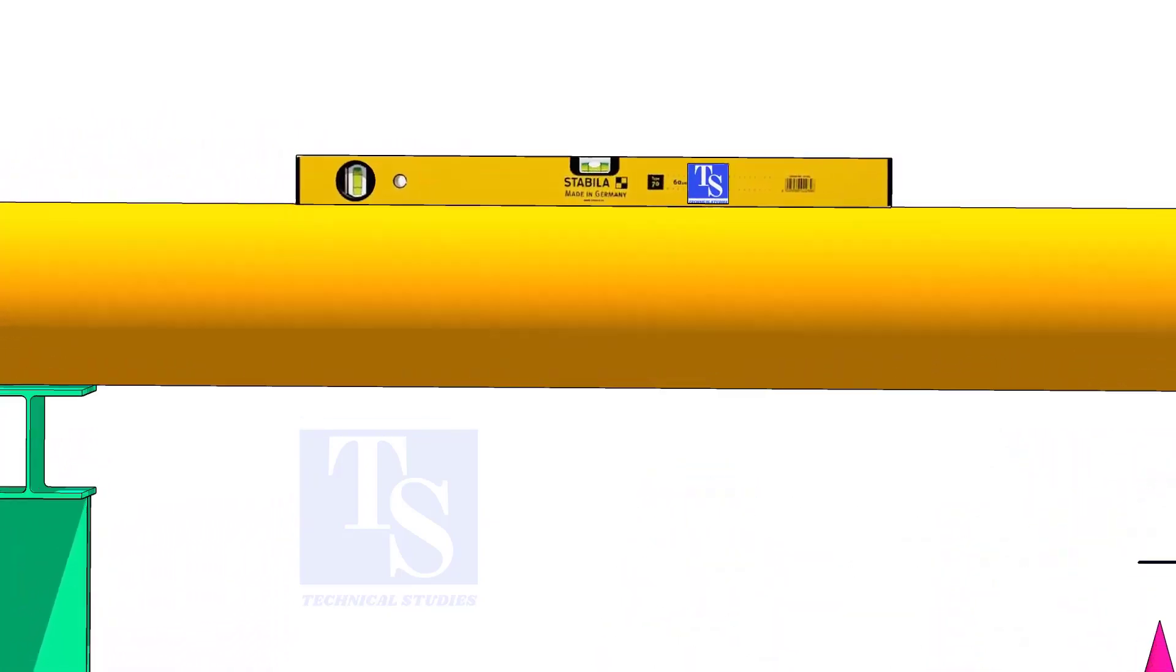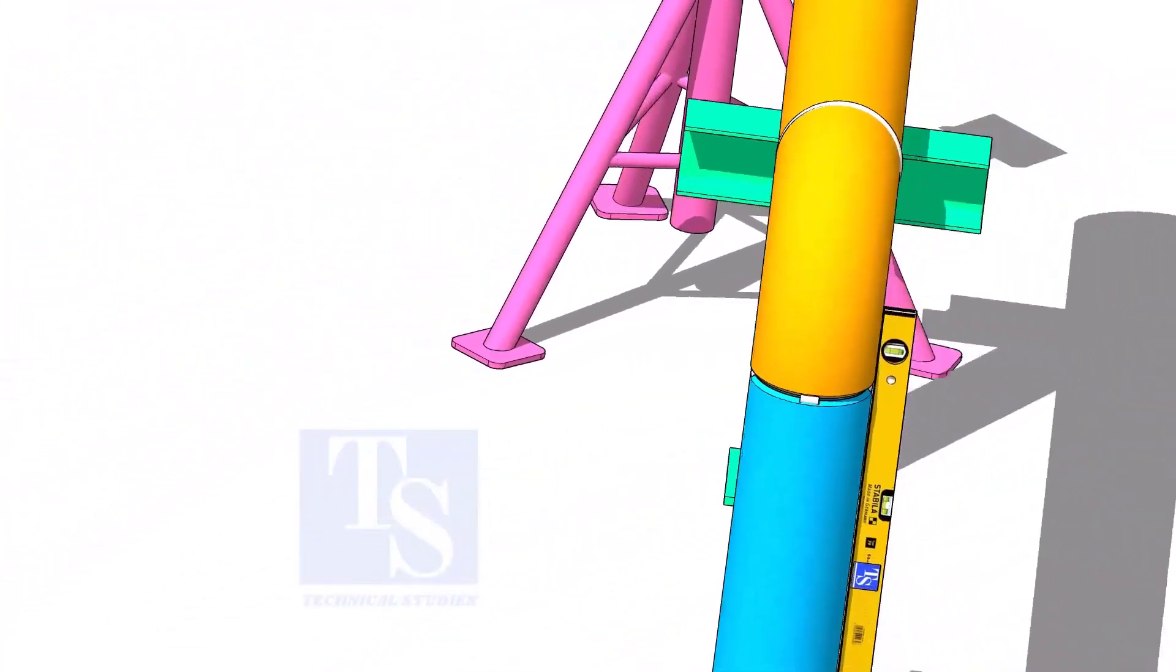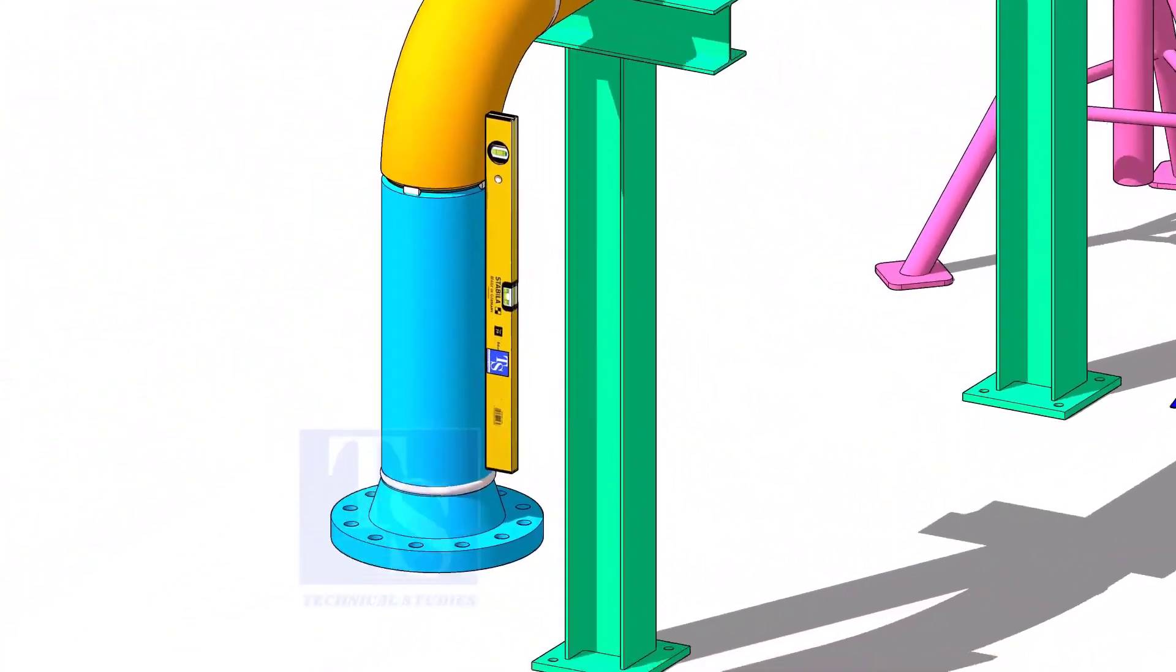Rotate spool number two vertically, as shown, and level the pipe. This position will ease the fitup of spool four.